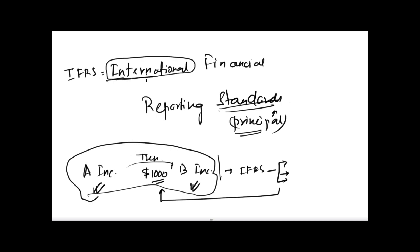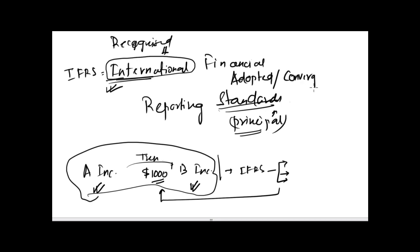IFRS is international — it is internationally recognized. If someone wants to understand how many countries are following IFRS — meaning how many countries have either adopted IFRS or converged with IFRS — they can go to the IASB website and understand whether a particular country is applying IFRS, and whether they have converged with it or adopted it entirely.